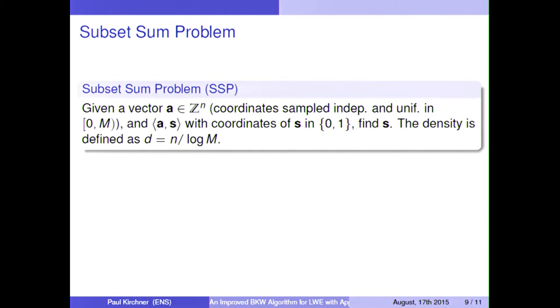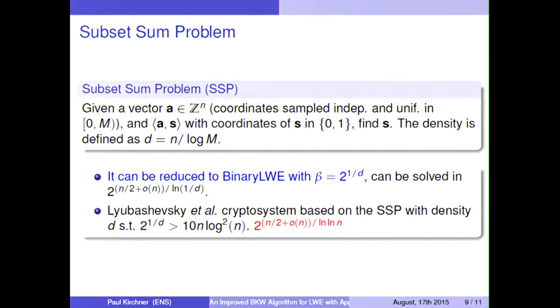Now the subset sum problem. So it's a very old problem. We are given a vector of integers which are uniform between 0 and M, and we are given the scalar product with some binary vector, and we want to recover this binary vector. So we define the density, which is n over log M. And for small density, it was known that lattice reduction algorithms are efficient.